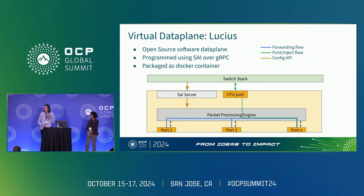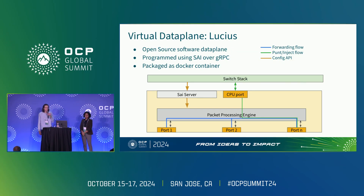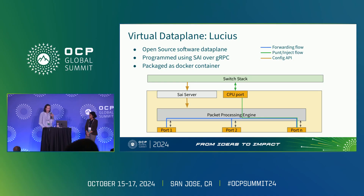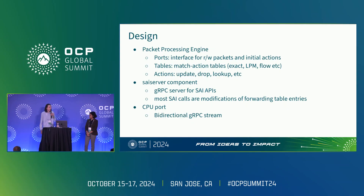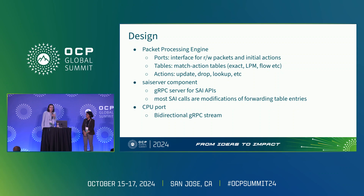There are three things to note about Lucius. First, there's the SAI server component, which is a gRPC server implementation of an API that looks very much like SAI. Then there's the CPU port, which is how we send packets to and from the data plane to inside the VM. And finally there's the packet processing engine, which is responsible for processing packets between the different ports and sending traffic around.